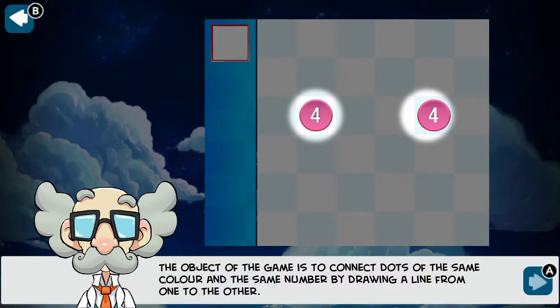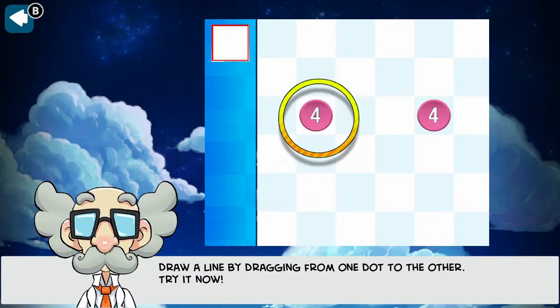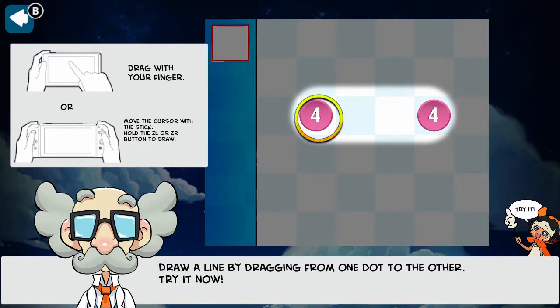The object of the game is to connect the dots of the same color and the same number by drawing a line from one to the other. You can use the touchscreen or the D-pad. You can also use the A button as this tells you to only use the ZL or ZR.